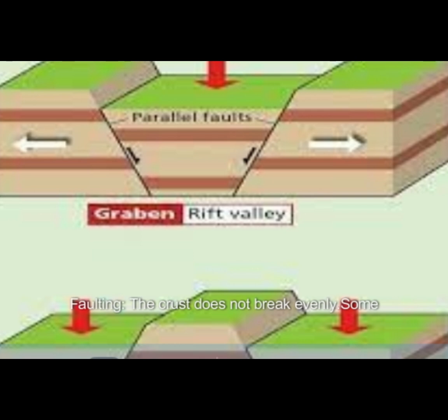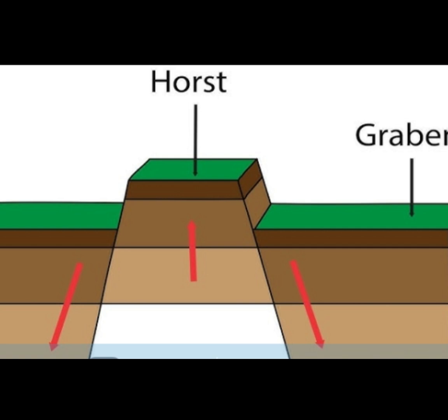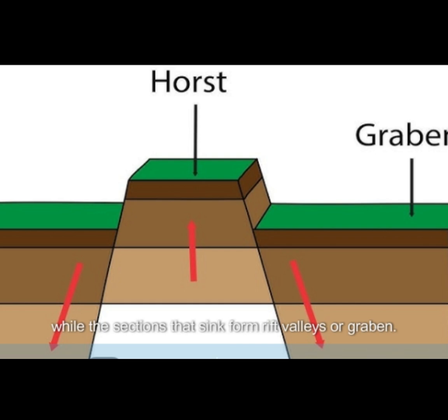Faulting: the crust does not break evenly. Some sections of the crust are pushed upwards while others sink down. The blocks of crust that move upwards form the block mountains, while the sections that sink form rift valleys or graben.